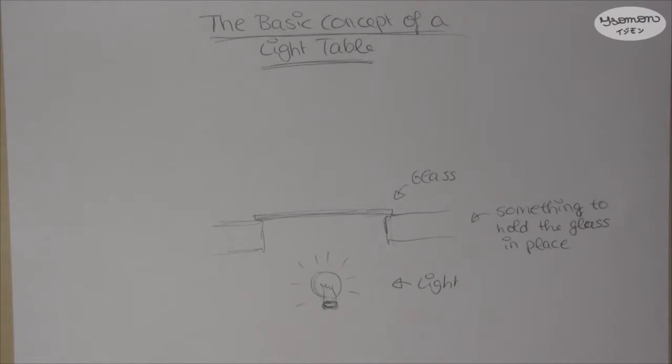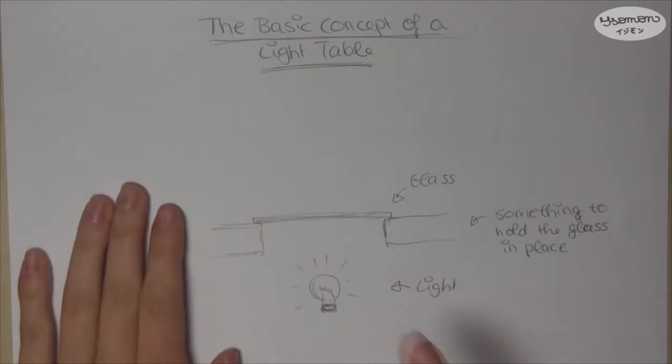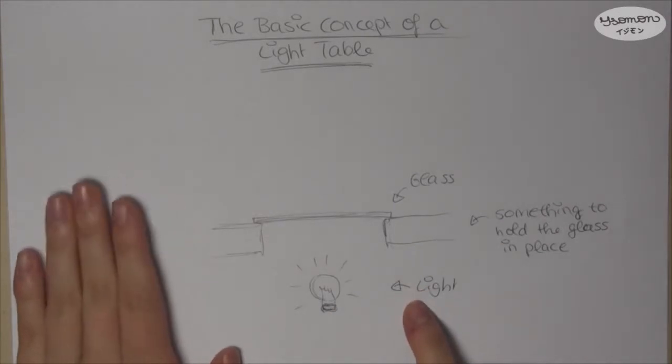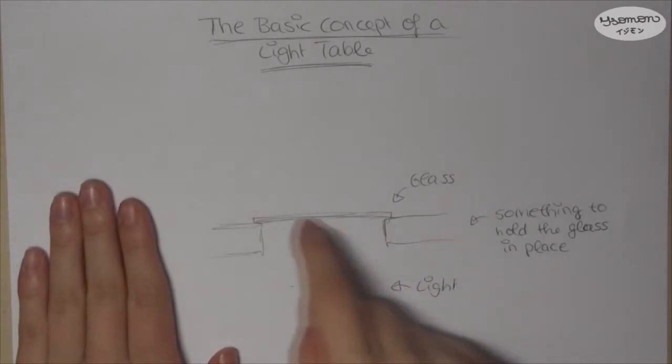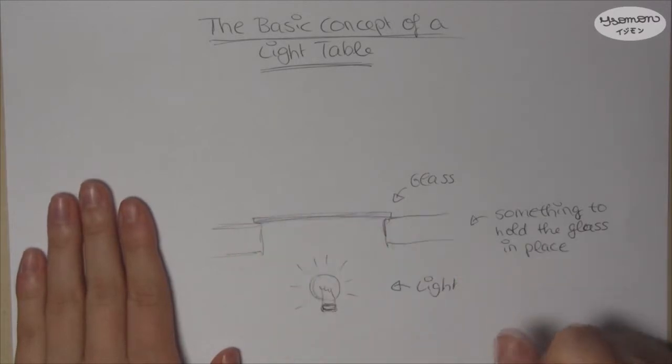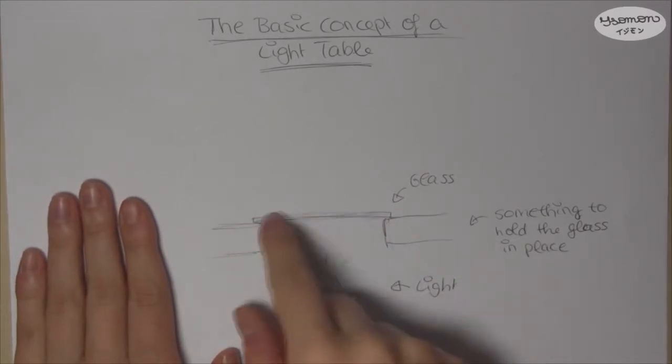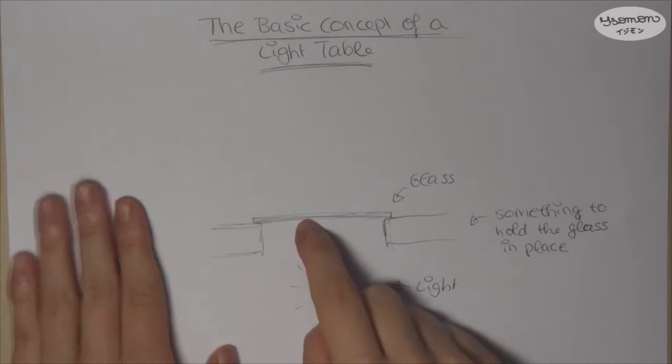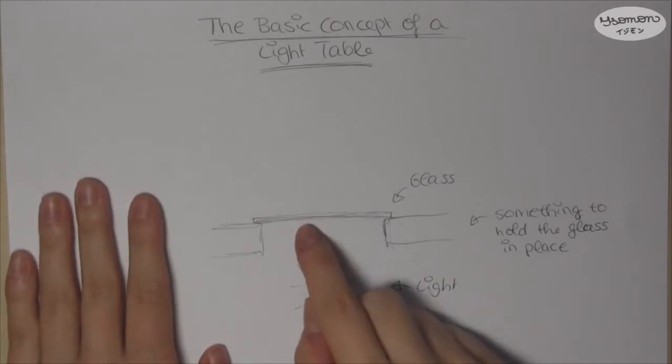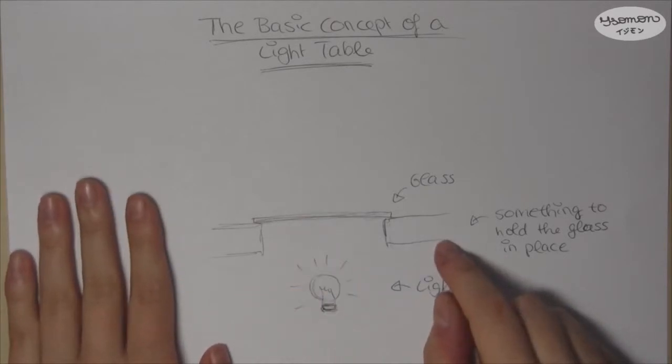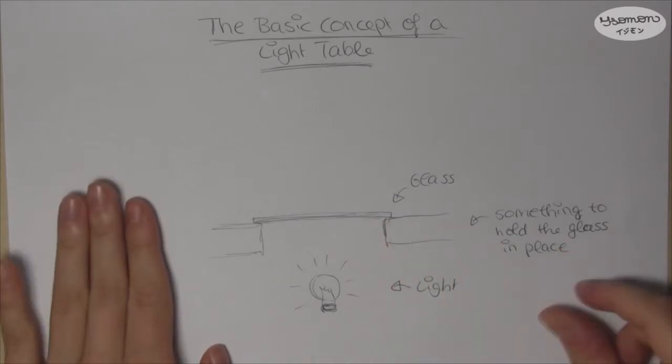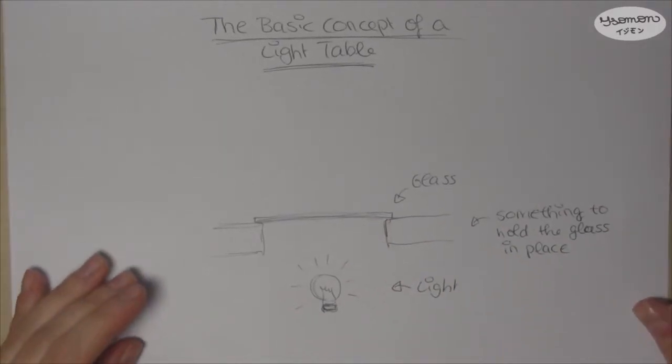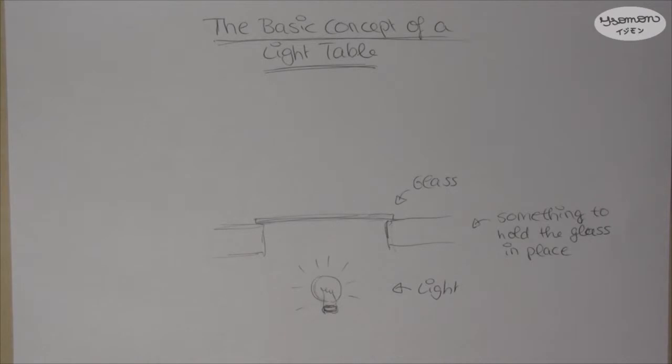So the basic concept of a light table is that you have a light, surprise surprise, then you need a glass where the light shines through and you could put your piece of paper on top of there and you trace your lines while you ink and something to hold the glass in place. So that's about it. It's just as easy as it sounds.